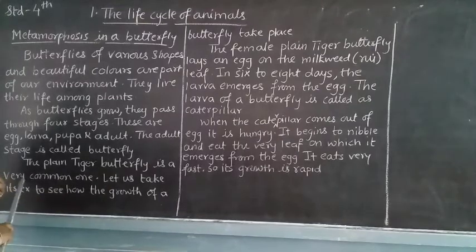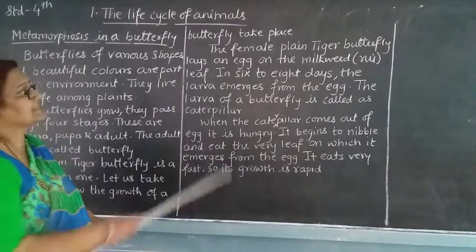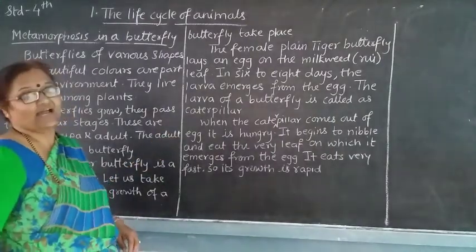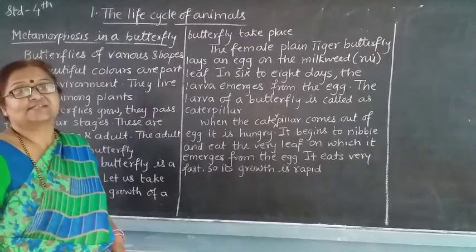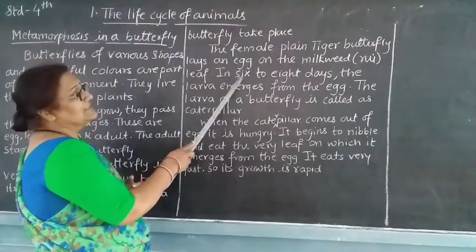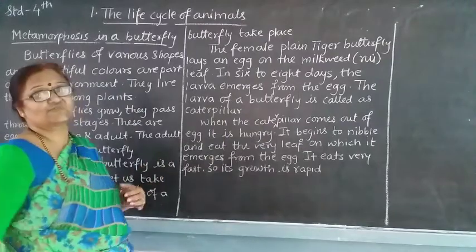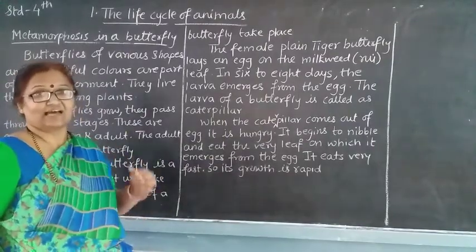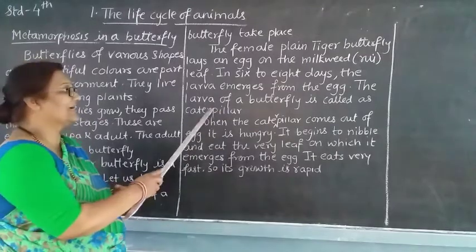The plain tiger butterfly is a very common one. Let us take its example to see how the growth of the butterfly takes place. The female plain tiger butterfly lays an egg on the leaf of a plant called rui. In six to eight days, the larva emerges from the egg. The larva of a butterfly is called a caterpillar.